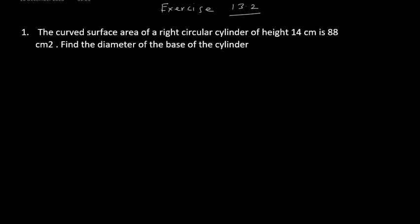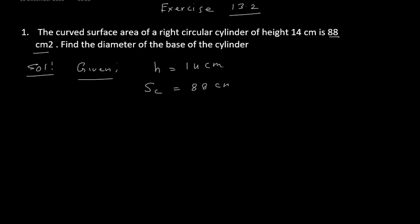Let us begin with the first problem. The curved surface area of a right circular cylinder of height 14 centimeters is 88 cm². Find the diameter of the base of the cylinder. Given: height is 14 centimeters, curved surface area SC is 88 cm². We have to find the diameter.